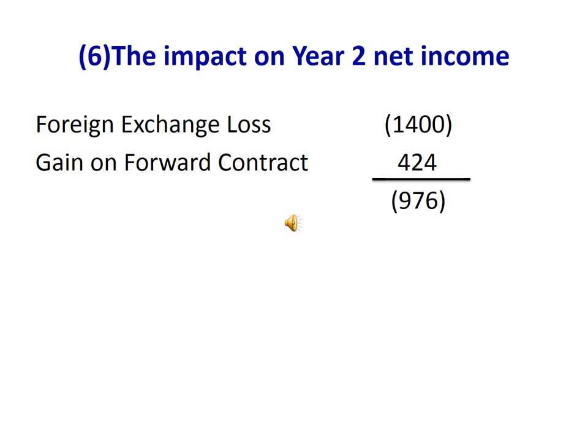For year 2, the foreign exchange loss was $1,400 and the gain in the forward contract was $424, so the result is a net loss of $976. Thank you.